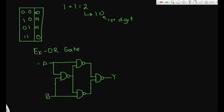Now let's try inputs 1, 0. Walking through the four NAND gates, the output comes out to 1, which matches the truth table. If you're having trouble understanding this, go back to the point in the video where you can see the NAND gate truth table, because this XOR gate is made up of four NAND gates.